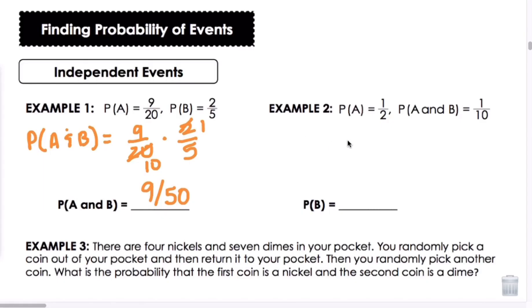Let's look at example 2. We have P of A is 1 half. P of A and B is 1 tenths. So let's substitute it into our formula. We'll put 1 tenths for P of A and B equals P of A times P of B. So that's the probability of B is what we're looking for. And we'll multiply by 2, and we'll end up getting 2 tenths, which is 1 fifth.